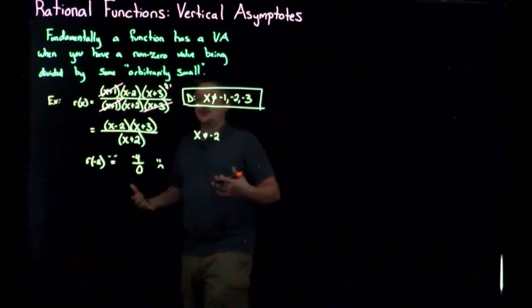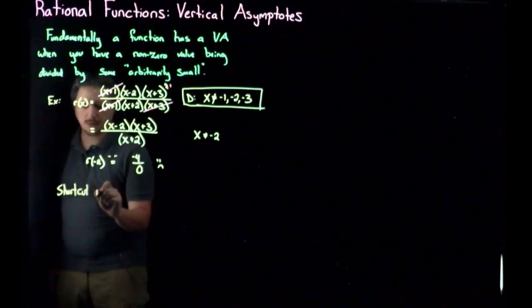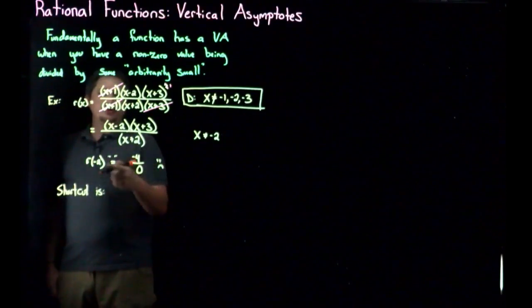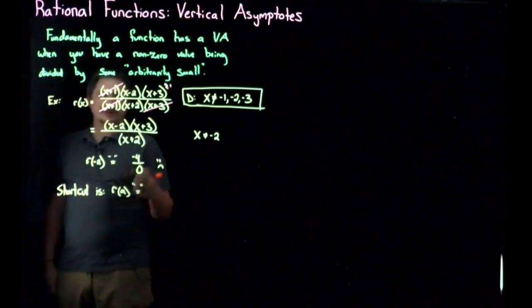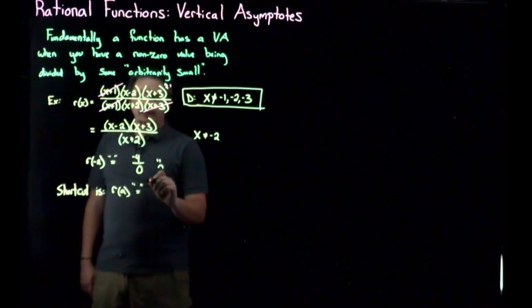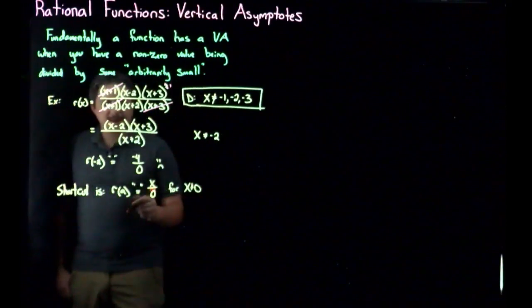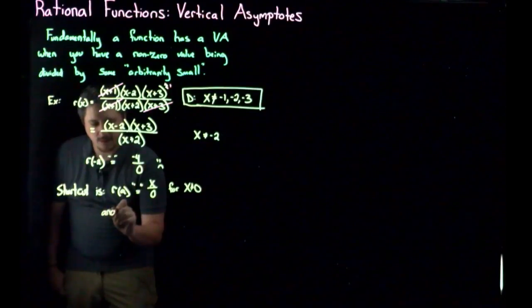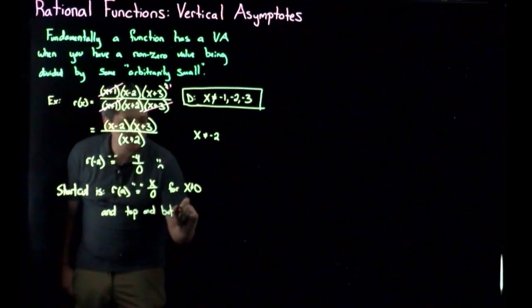So the shortcut version is if r of some value, something like a, equals, again, in these quotes, because it's a restriction, it can't be, some x over 0 for x not 0, meaning I get something that is non-zero over zero, and the top and bottom are continuous.